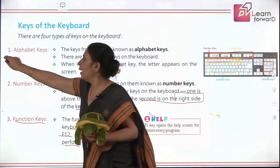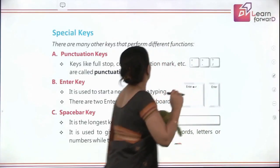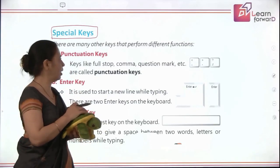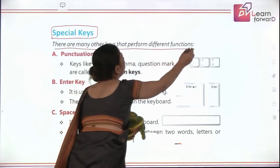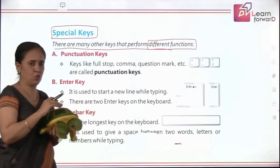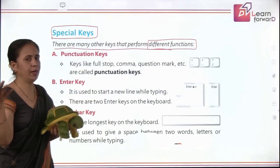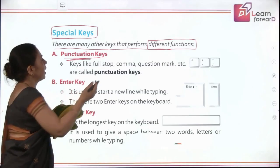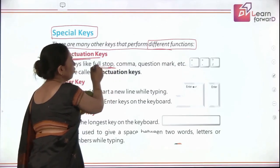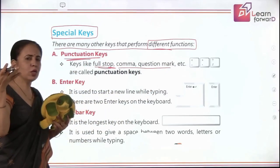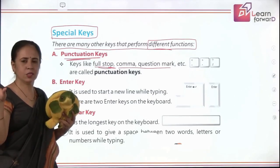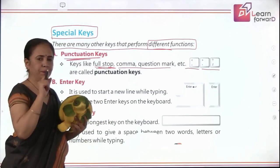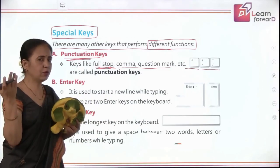We are going to talk about certain special keys available on the keyboard. There are many other keys that perform different special functions. The first category is punctuation keys — punctuation means things like comma, question mark, full stop, semicolon. There are so many punctuations when you write an English sentence and these keys play that role.